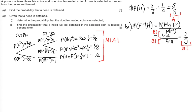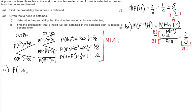Now for part B part 2, which is a little unusual and requires more thinking. We need to find the probability that a head will be obtained if the selected coin is tossed a second time, given that a head was already obtained. We need to think carefully about how this could occur.